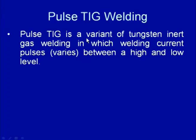Another variant is the pulsed tungsten inert gas welding process, in which the current is pulsed between a low level and a high level. This kind of process where current is varied continuously as a function of time during welding is called pulse welding. In pulse TIG, the welding current is varied continuously between a high level — the peak current — and a low level — the base current.